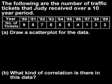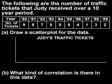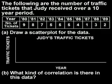To draw a scatter plot for the data shown here, notice that the table shows the number of traffic tickets that Judy received each year for a 10-year period. Begin by titling your scatter plot "Judy's Traffic Tickets." Next, draw the axes — the x-axis will be labeled with years, and the y-axis will be labeled traffic tickets.